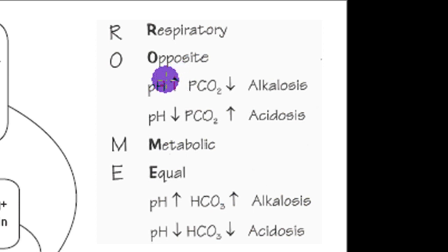Essentially, if you've got an increase in pH, that means alkalosis, and if we have a decrease in CO2, it means it's respiratory alkalosis. If you have a decrease in pH, it means we've got acidosis, and if that's accompanied by an increase in CO2, then we've got respiratory acidosis.